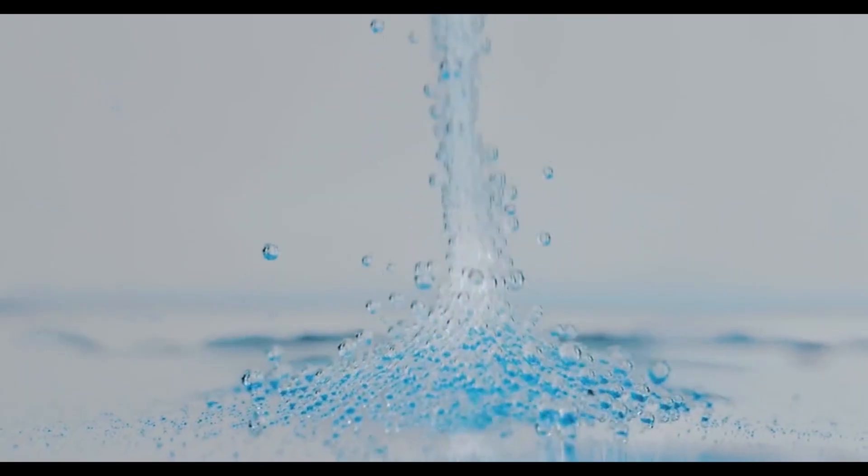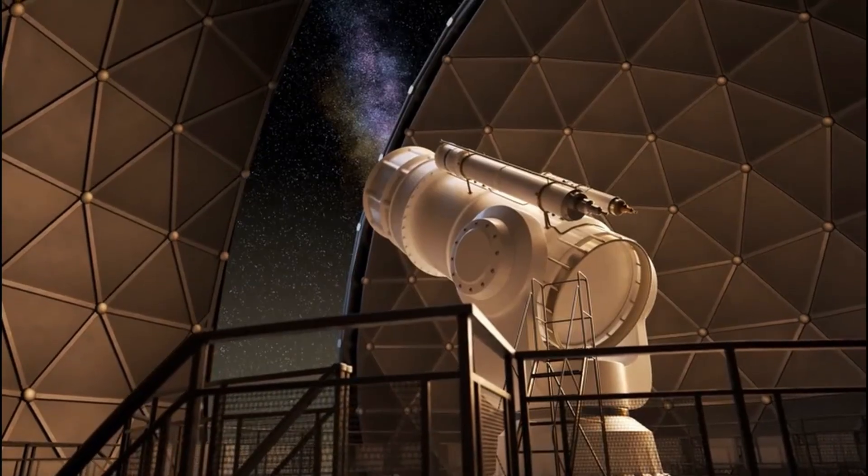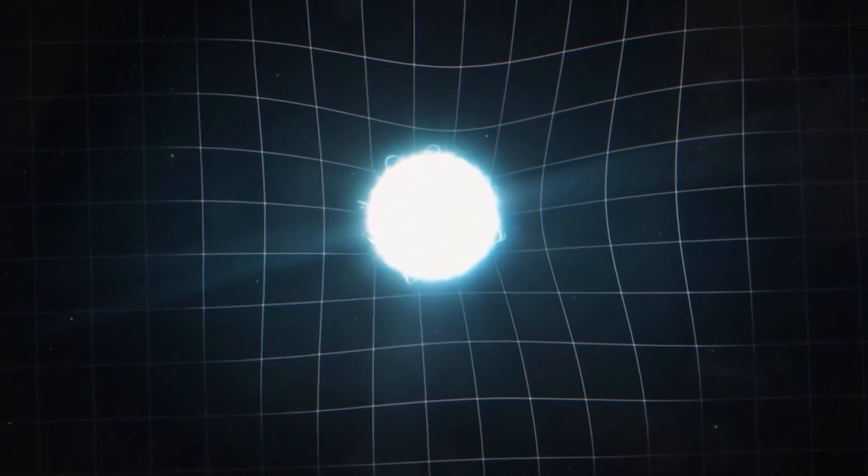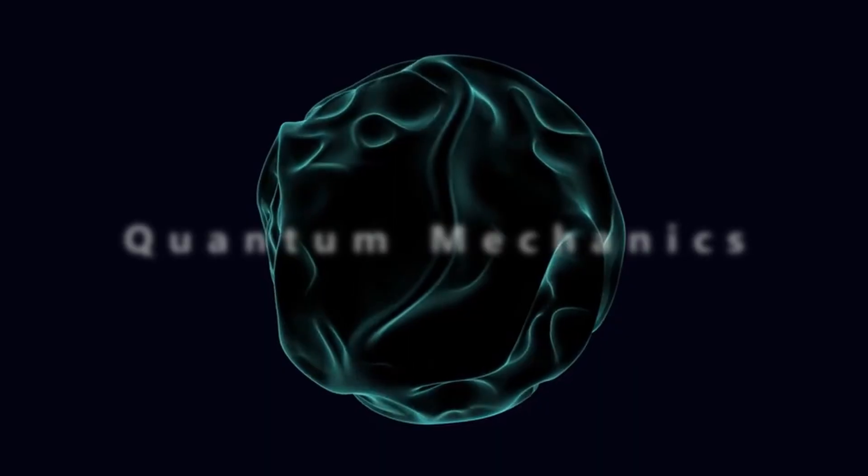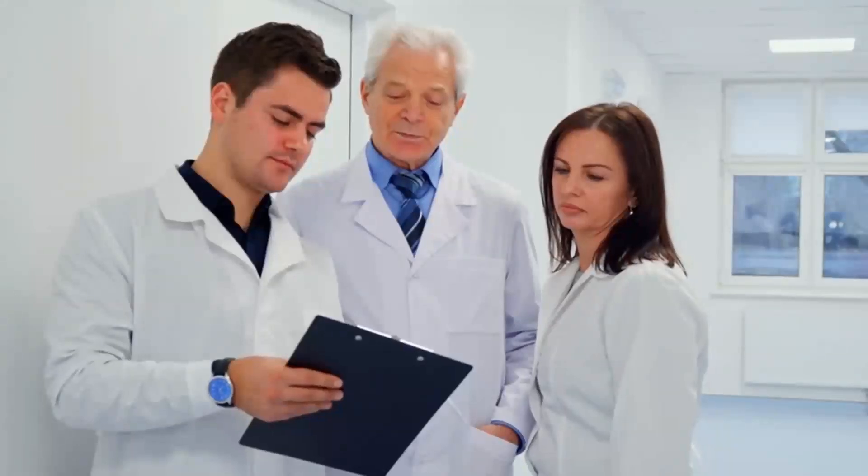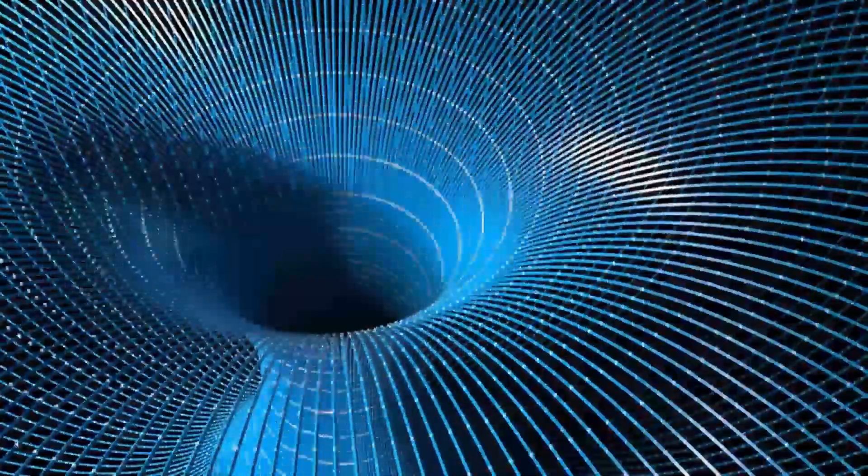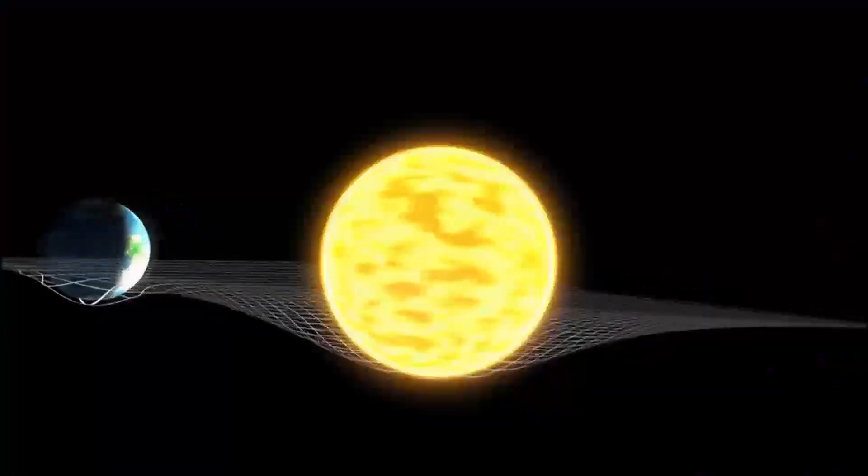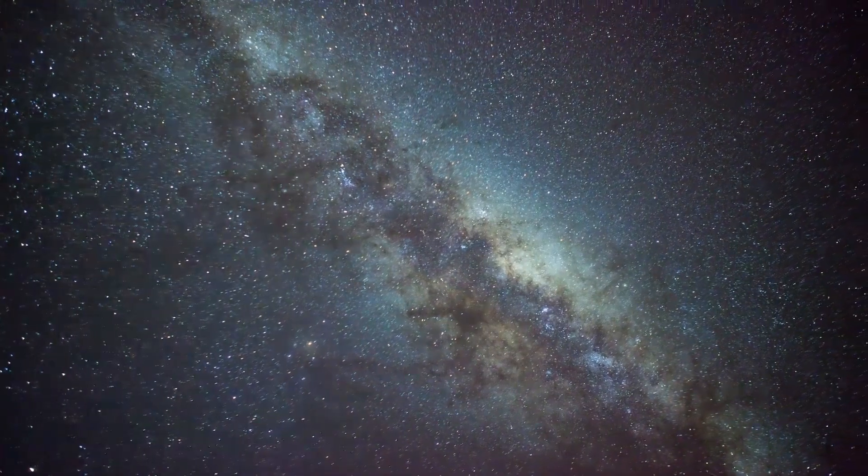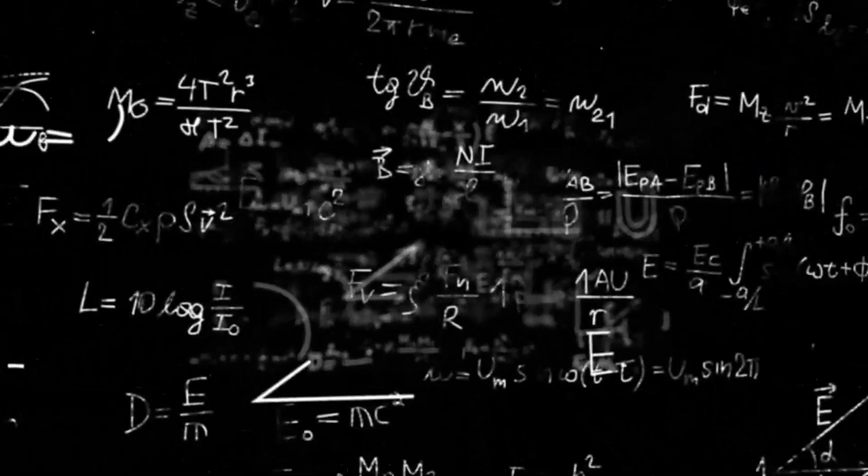Now you might be thinking, if singularities are where physics breaks down, how can scientists study them at all? This brings us to one of the biggest mysteries in modern physics. At a singularity, our two best theories about the universe—quantum mechanics and general relativity—give completely different answers. It's like having two expert witnesses who tell completely opposite stories about the same event. General relativity, Einstein's theory of gravity, tells us that massive objects bend spacetime. It works perfectly for describing planets orbiting stars, light bending around galaxies, and even the expansion of the universe. But when you try to apply it to singularities, the math gives you infinite answers, which don't make physical sense.